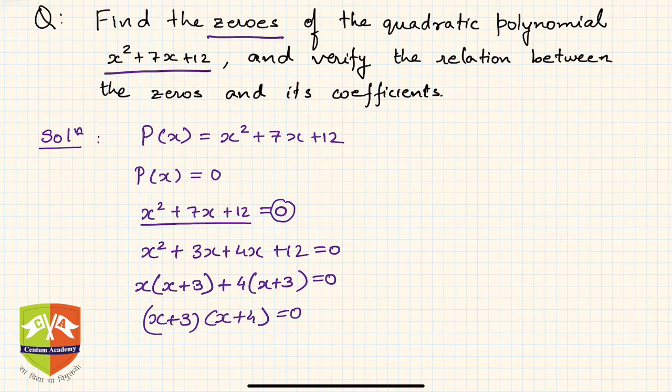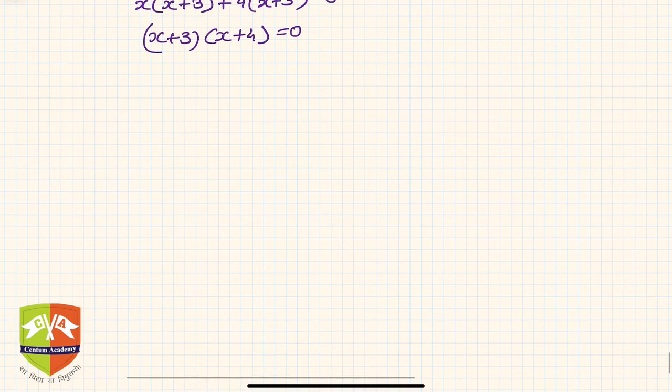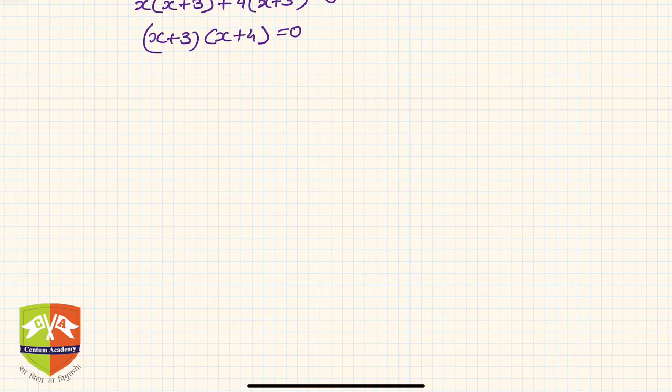Now, the product of two factors is zero. We know how to deal with such cases. Either x + 3 = 0 or x + 4 = 0. This implies x = -3 or x = -4. These are the two values of x, or the zeros of the given polynomial.